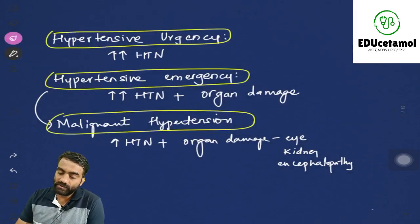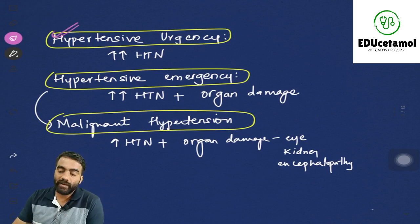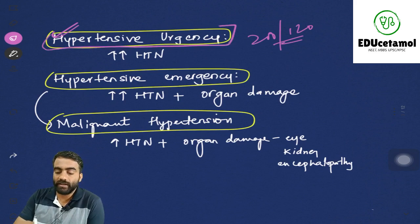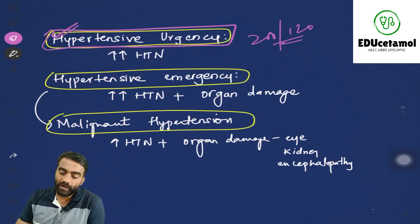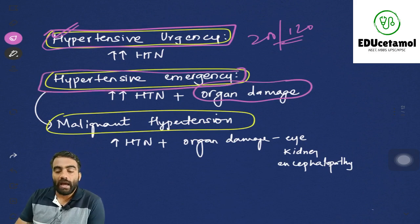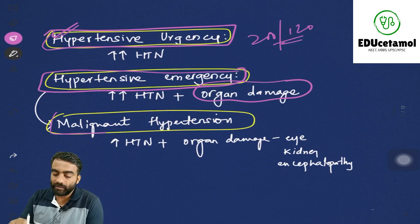Now let us understand some terms associated with hypertension. Hypertensive urgency means the blood pressure is very high, more than 200 by 120, but not to an extent that there is any organ damage. The severe increase in blood pressure without organ damage is called hypertensive urgency. When there are signs and symptoms of organ damage, then it is called a hypertensive emergency. One subtype of hypertensive emergency is malignant hypertension.